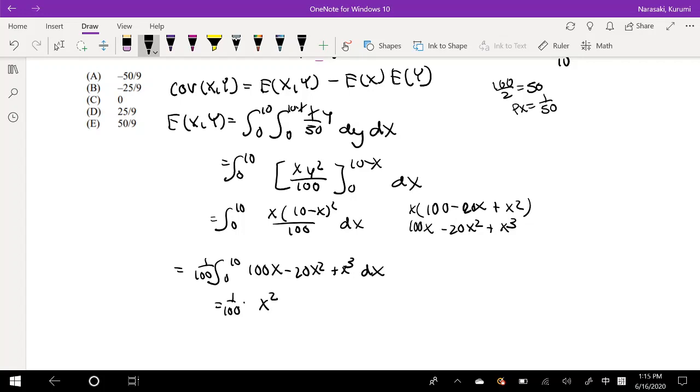So this is equal to... I'm going to take that 100 out, so it's a little bit easier. Is equal to 1 over 100 times integral from 0 to 10 of 100x minus 20x squared plus x cubed dx. So it's x squared over 100 divided by 2, which is just 50, minus x cubed times 20 over 3, plus x to the fourth times 1 over 4. And this is evaluated from 0 to 10.